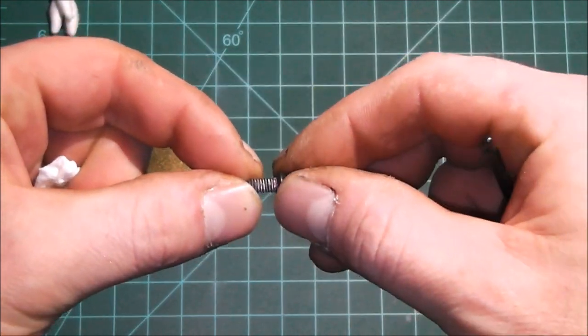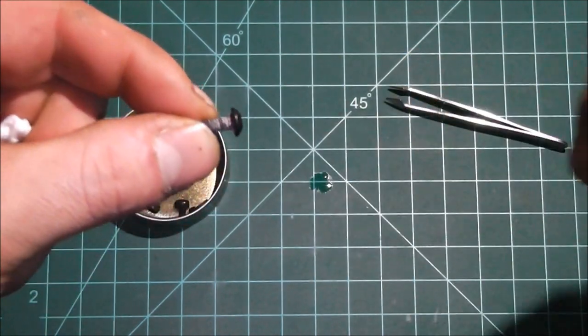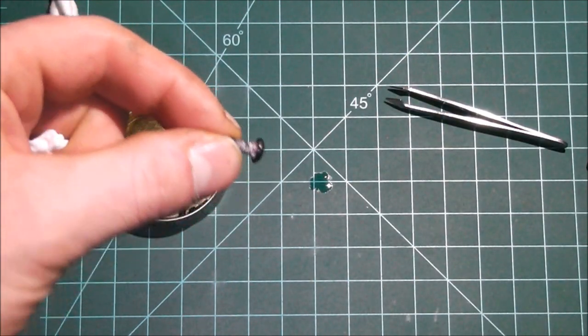But really you're still going to have some Loctite stuck in there. So it's not really the best way, but you can use it in a pinch if you're at the field and you've got to change out a fastener, that's a pretty quick way.